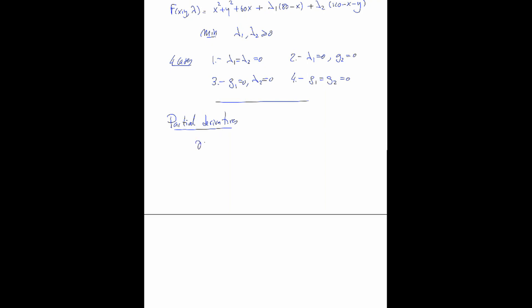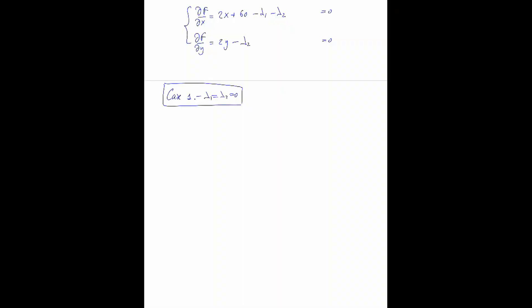We must have that the partial of the Lagrangian with respect to x should be zero: 2x plus 60 minus lambda 1 minus lambda 2 equals zero. And the partial with respect to y, which is 2y minus lambda 2, should also be zero. For Case 1, lambda 1 and lambda 2 are zero, so the partial derivative gives 2x plus 60 equals zero and 2y equals zero. That gives us the point x equals minus 30, y equals zero.